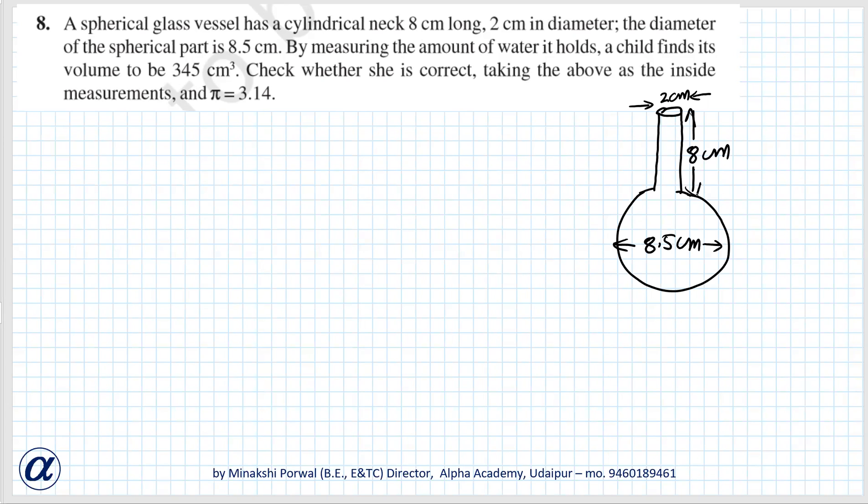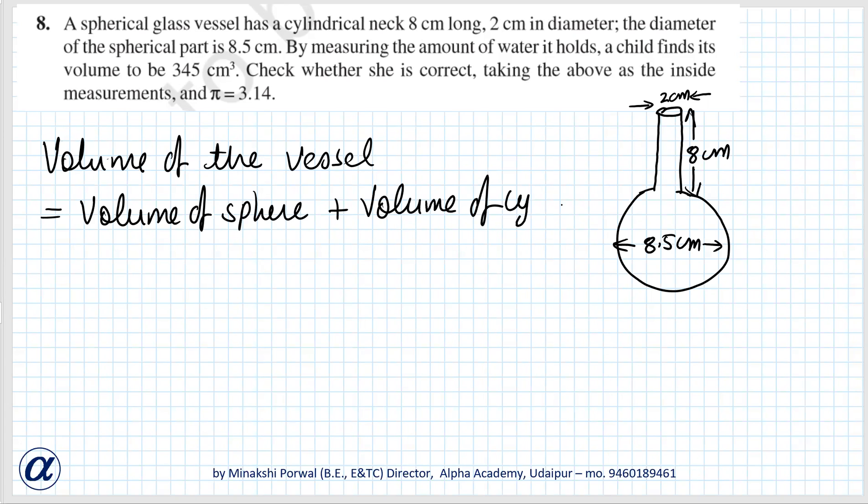What we have to do is we have to actually find the volume of this combination. Volume of the vessel is equal to volume of sphere plus volume of cylinder.